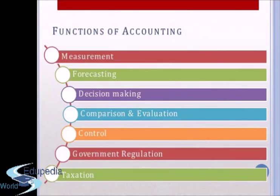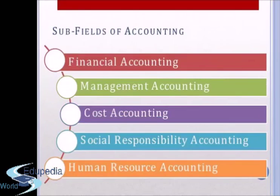Lastly comes Government Regulation and Taxation. Accounting provides various information to the government to exercise control on the entity and helps the government collect tax revenues from businesses. Until and unless a business accounts for its income, it will be very difficult for the government to collect tax revenues. So accounting is very helpful for the government. To summarize, the main functions of accounting are: Measurement, Forecasting, Decision Making, Comparison and Evaluation, Control, and Government Regulation and Taxation.